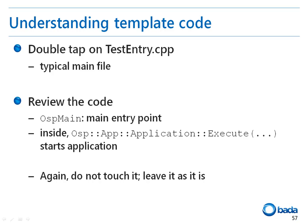Let's have a look at the inside of an application using a template. First, take a look at the testentry.cpp file of the test application. You can see the OSP main function in the source code. This OSP main function performs the role of the main function in the conventional C programming language. Inside the OSP main function, you can see that the OSP app application execute function is called. This function runs the application using the application class that we created. Nothing needs to be changed in this file.